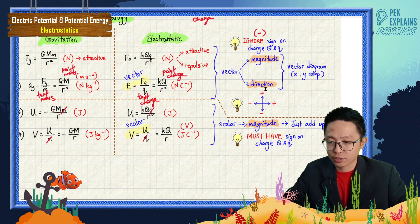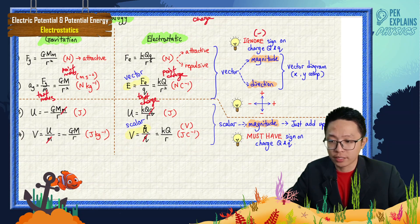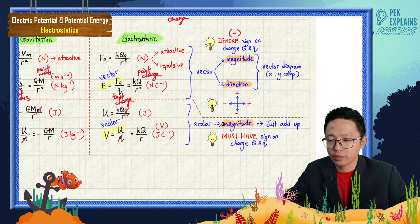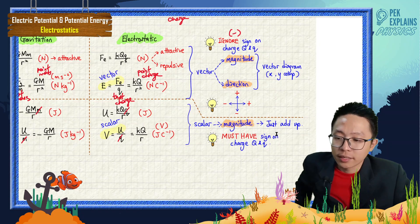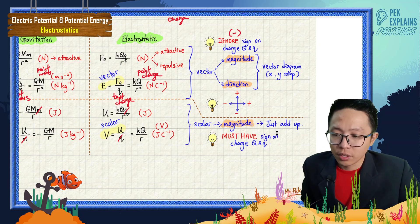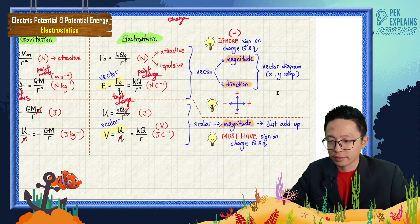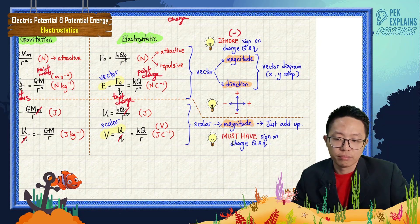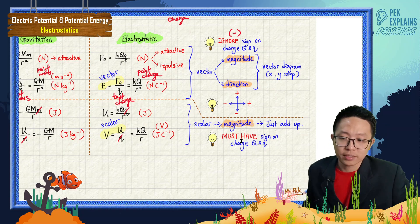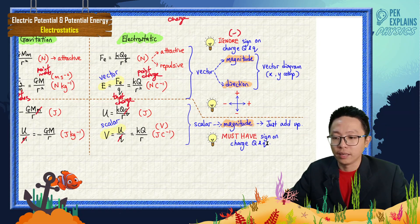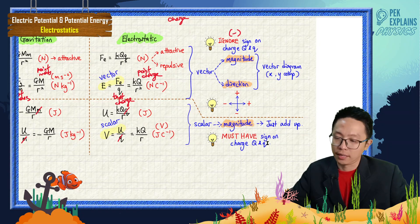You need to put directions. But for potential and potential energy, it is just a scalar quantity. You just add up — no need to draw any vector, no need to do any XY components. But for the charge, you must have the sign. If it is a negative charge, you must insert the negative sign. I will explain more in the problem solving.